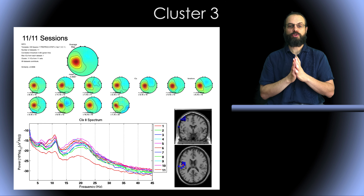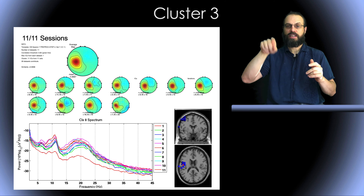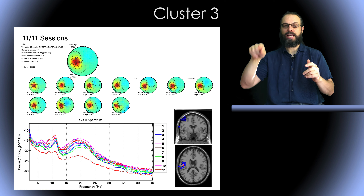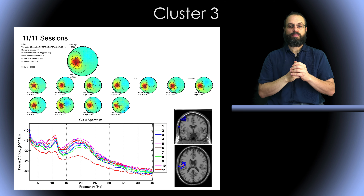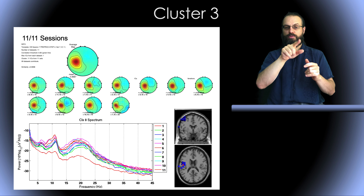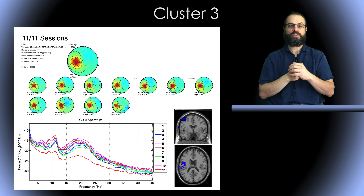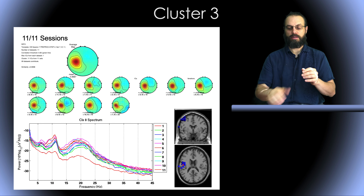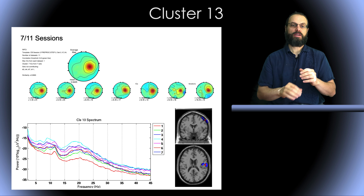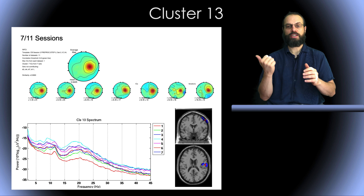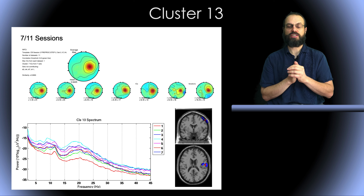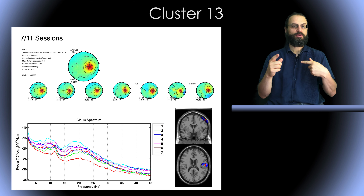Here is the left mu rhythm. This is a rhythm called mu because in the power spectrum you get a shape like the letter M. Most of the components are similar, but we have one that's a little bit of an outlier with lower power. Here is another example — this is the right mu rhythm. We only have 7 out of 11 sessions, so we couldn't find it in all sessions. It's unclear why it can be found in some sessions and not others.